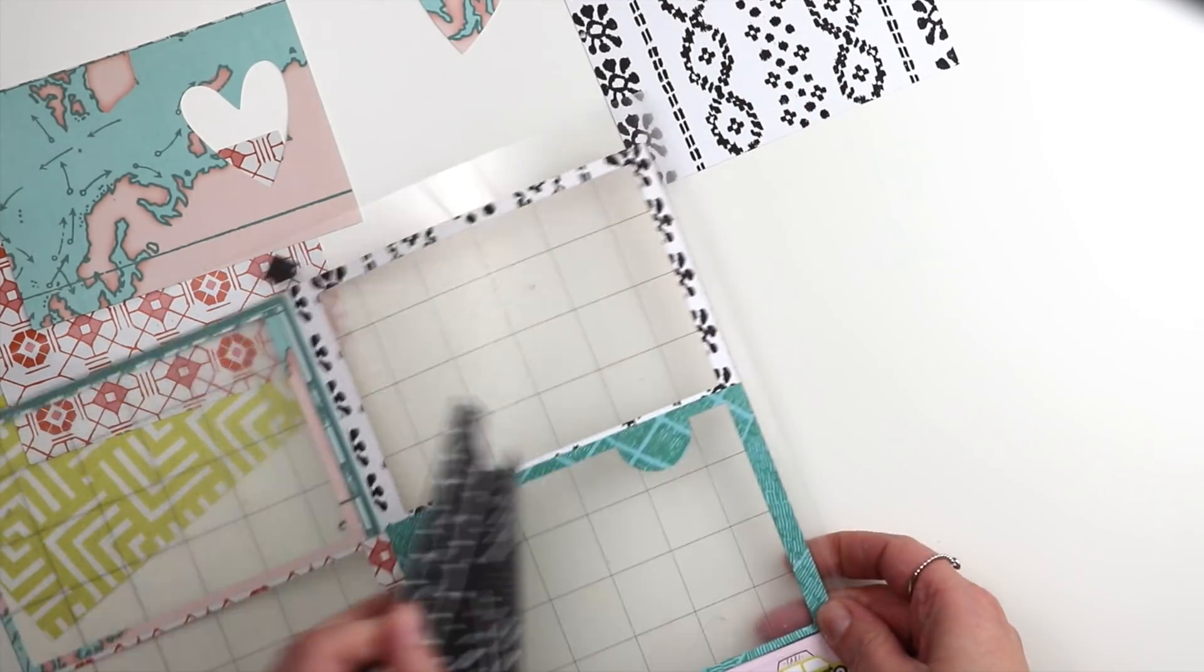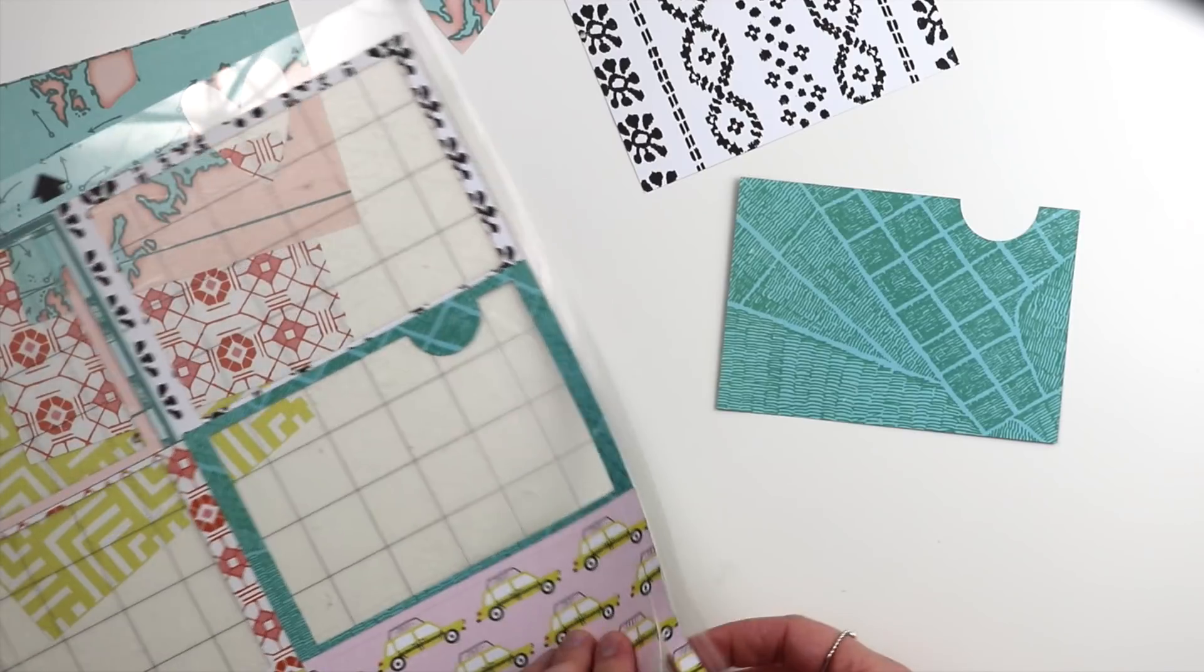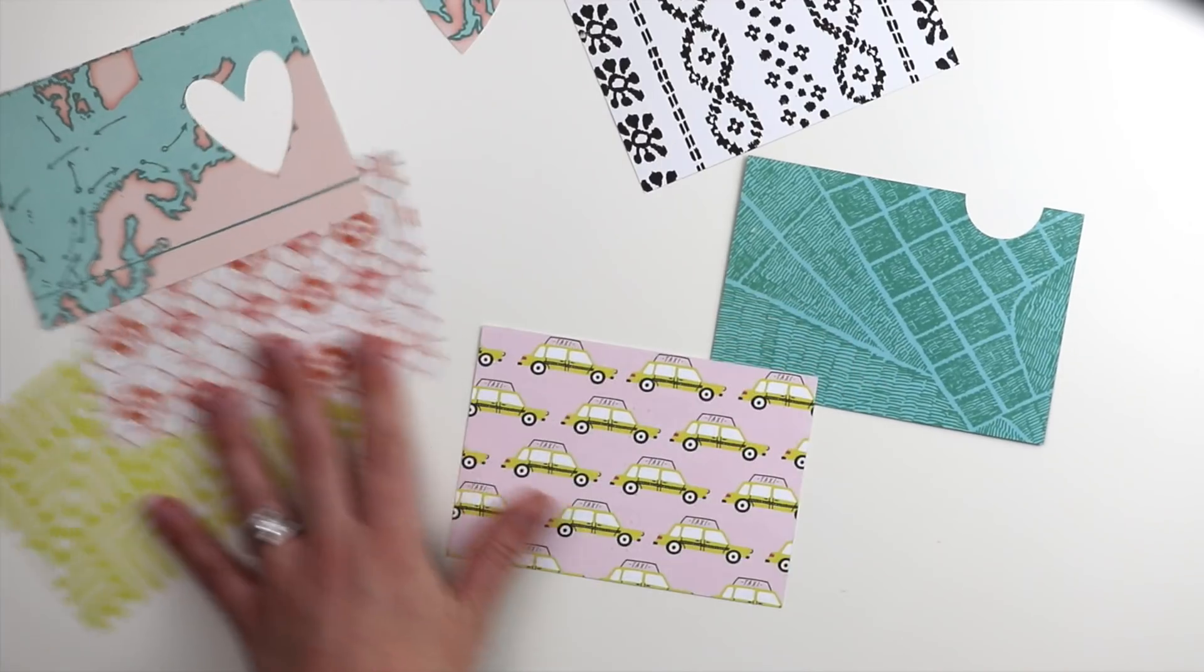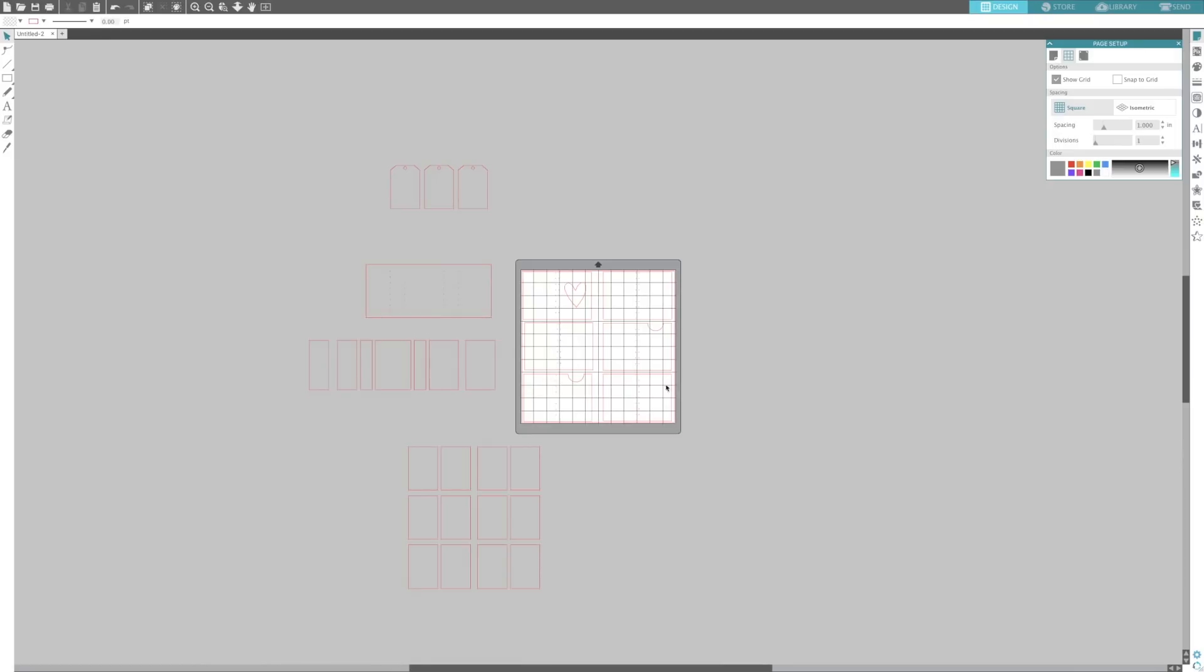Just want to show you how to cut out the rest of the pieces for the mini album. I've peeled those off the mat and then I'm going to go back into Silhouette. I'm going to select all of these pages and just move that over just to not be confused.